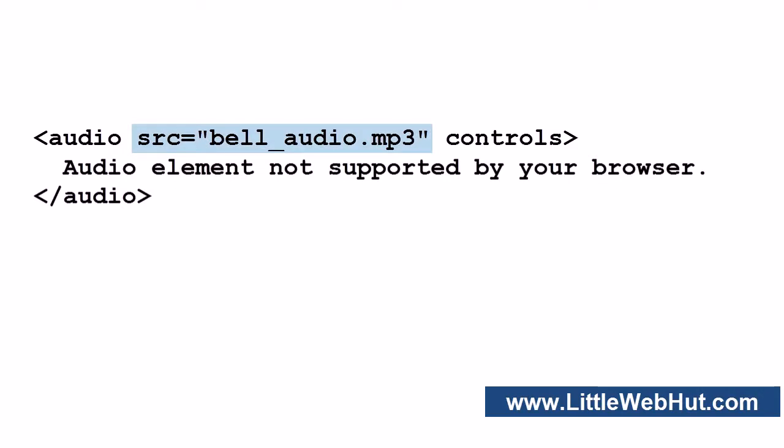We'll start by looking at the audio element. When using the audio element, there are two different ways to specify the URL of the audio source file. One method is to specify the audio source file using the source attribute as shown here. This method has a drawback, however — at the time this video was made, the major browsers do not all support the same audio file types.